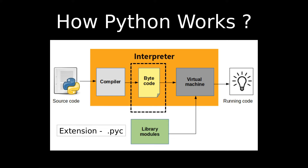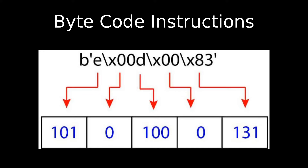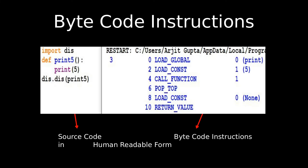Now, the bytecode phase. The extension of a bytecode file is .pyc — the source code was .py, the bytecode file is .pyc. The image on screen shows a basic bytecode instruction — something like \x00d\x00\x83 — which is basically an instruction to the machine. We cannot understand it, but luckily we have a module called the disassembler, which converts the bytecode into human-readable form.